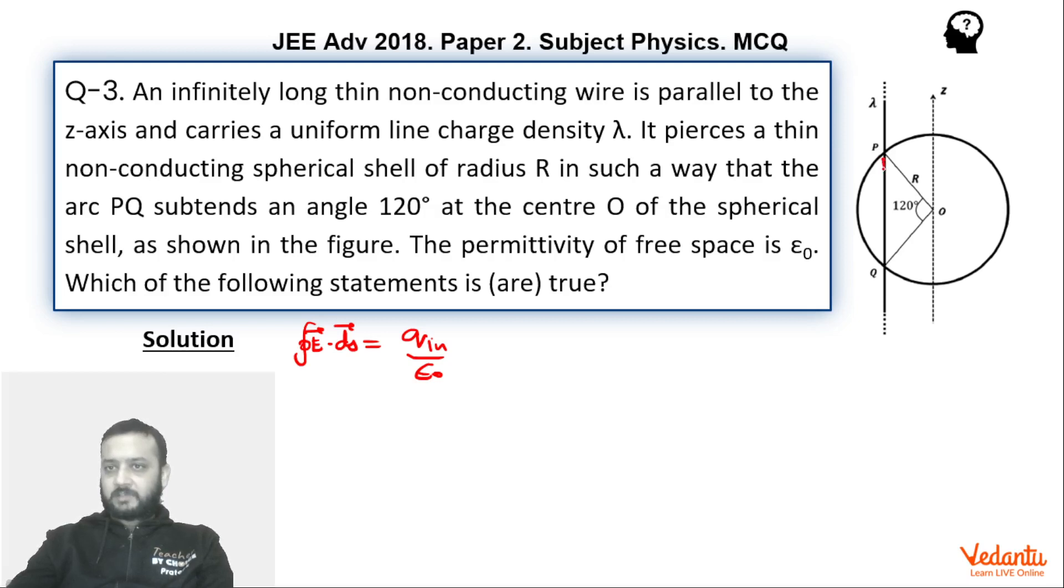Let's find the charge which is enclosed within the sphere. This red section of the wire lies inside the sphere. So if we find the length of this, if you draw the perpendicular from this center on this wire, it will be r sin 60 plus r sin 60. So we can say that q enclosed will be lambda into 2r sin 60, divided by epsilon naught.